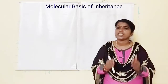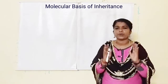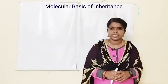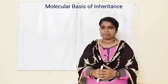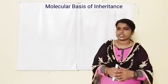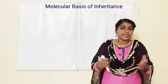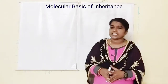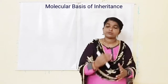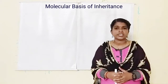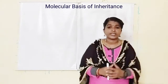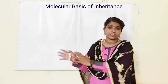DNA means deoxyribonucleic acid. There are two nucleic acids — DNA and RNA. RNA means ribonucleic acid. In this chapter we will discuss about the structure of DNA, the search for genetic material, RNA world, the process of protein synthesis, genetic code, etc.